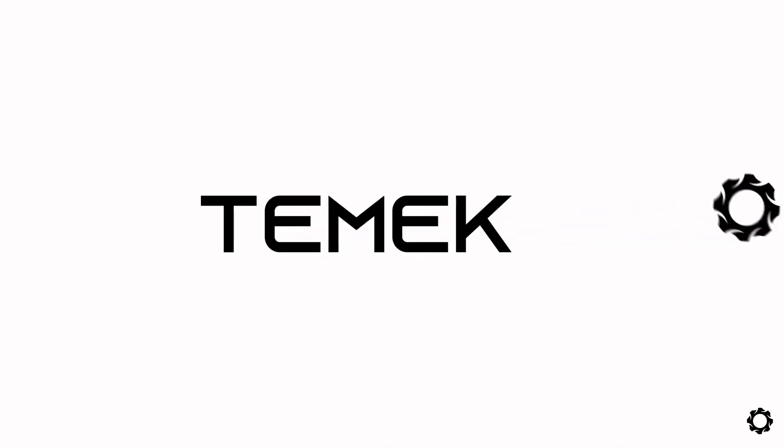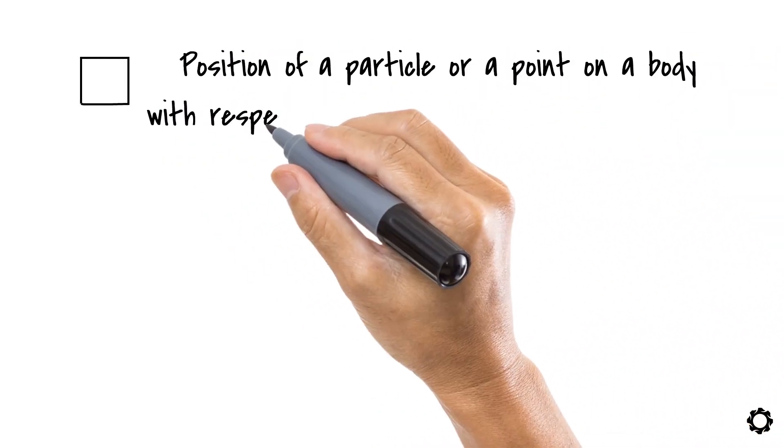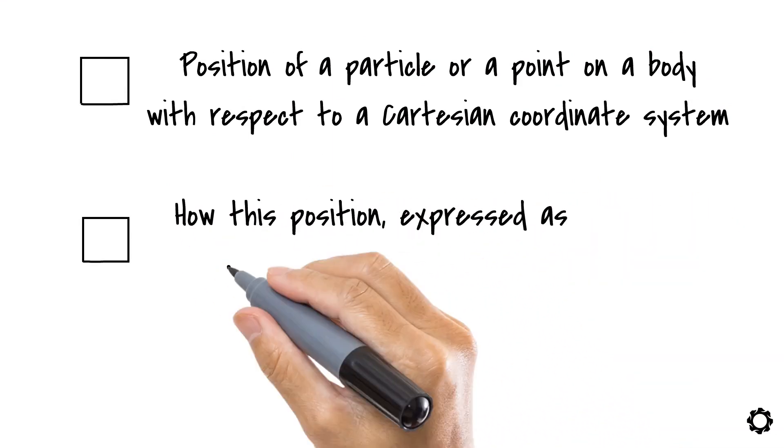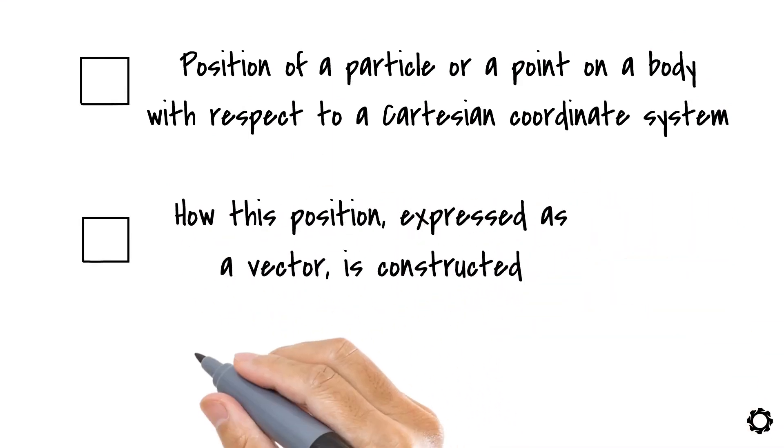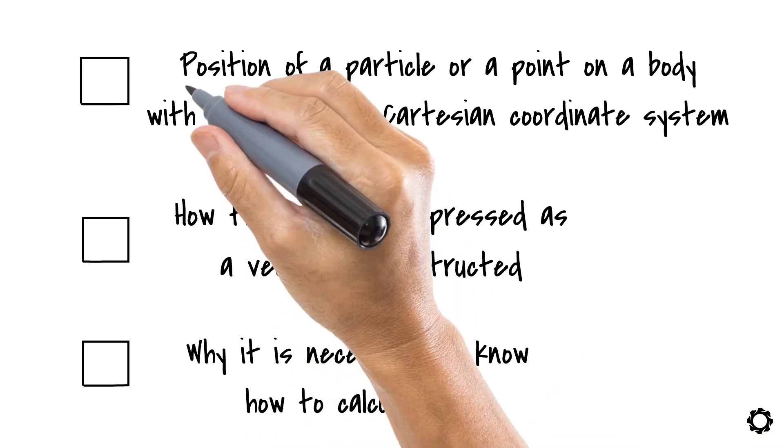Hi and welcome to Temeco. In this video we will talk about the position of a particle or a point on a body with respect to a Cartesian coordinate system. We will show you how this position, expressed as a vector, is constructed and why it is necessary to know how to calculate it. Let's jump right into it.